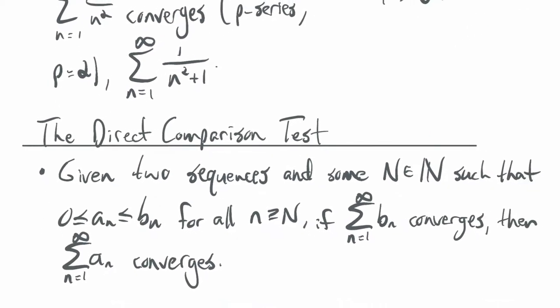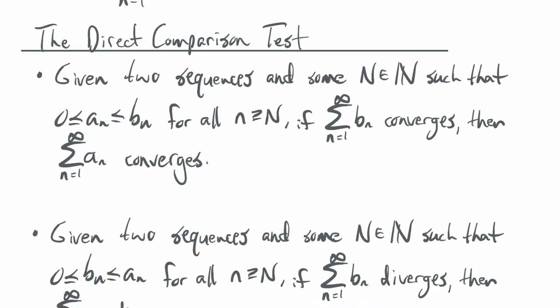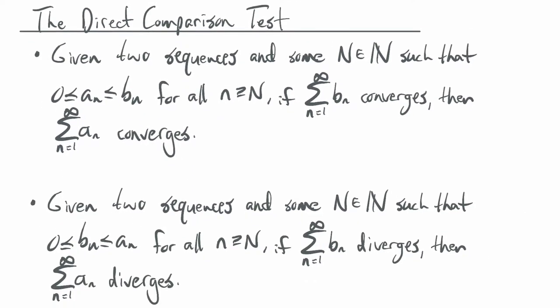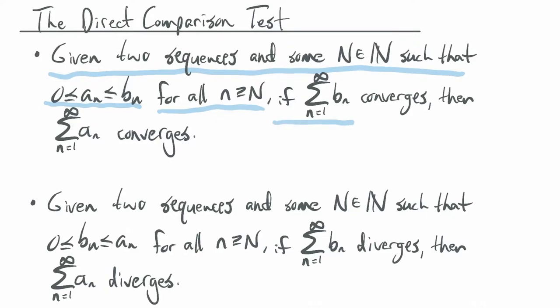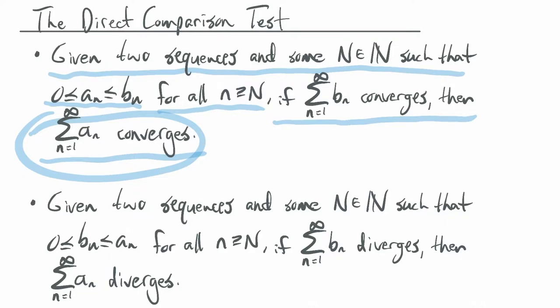Let's put that in formal language. Direct comparison test — there are two ways to do this, two directions. Given two sequences and some big N in the natural numbers such that 0 ≤ a_n ≤ b_n for all little n greater than or equal to big N: if the series of b_n converges, then the series of a_n converges automatically, because you've shown that this is the smaller series when you set up and demonstrate this inequality.